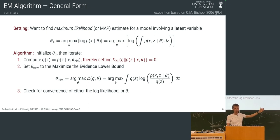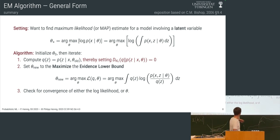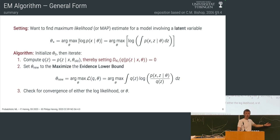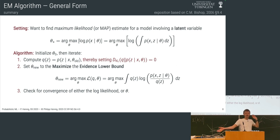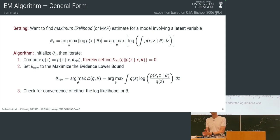This function of theta is not the evidence — it's just another function which happens to have the correct value at our starting point in theta and is a lower bound. So when we increase it from a point where the bound is tight, we necessarily increase the evidence as well. We keep doing this until we don't increase anymore — then we're stuck in some local optimum of the evidence.